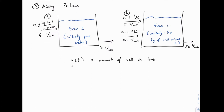Our goal is to find a function y that describes the amount of salt in the tank at any point in time. So y(t) is changing and increasing from 0 toward that most salty level. Notice that as the mixture comes in and goes out, the level in the tank stays constant — there's always 500 liters because every minute 5 liters comes in and 5 liters goes out, so the level stays steady.